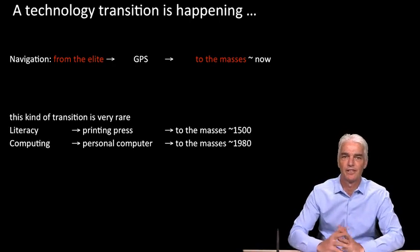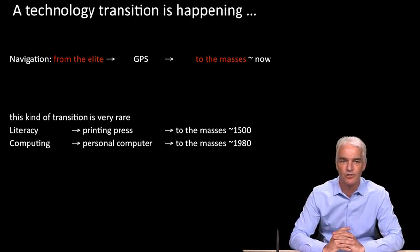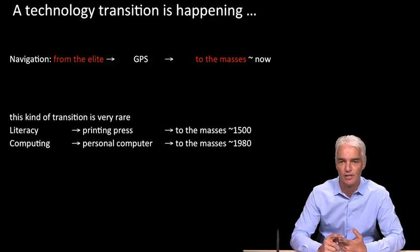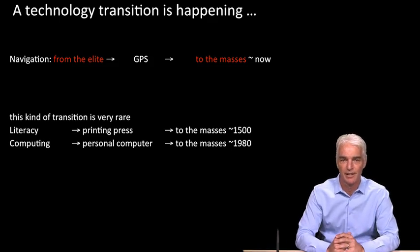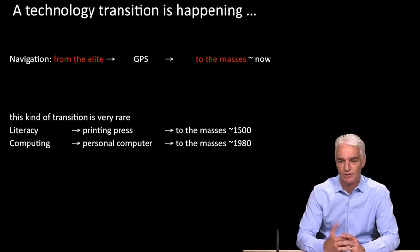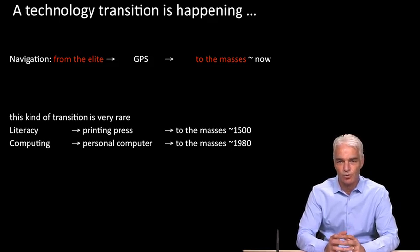So what we're seeing is that a technology transition is happening right now. Navigation is a field that for millennia was the province of the elite. It was done by officers in navies and armies. And it was done literally by priests in times gone by. And now everybody is a navigator. You've got your smartphone or tablet, and you can find your way around. And so navigation, the field of navigation, thanks to GPS, is moving towards the masses. So that's cool.